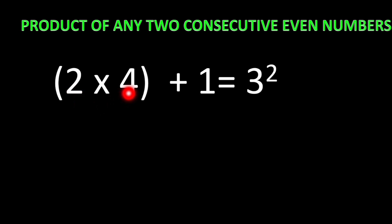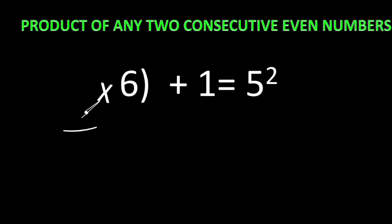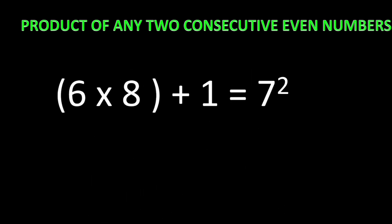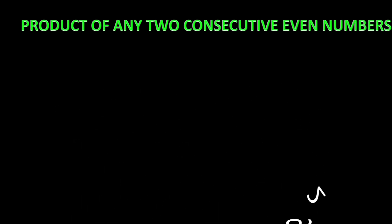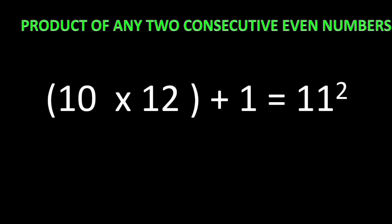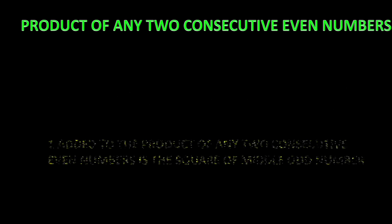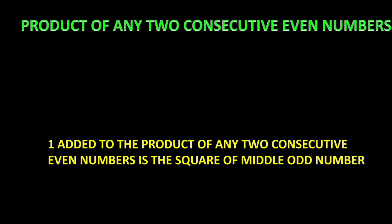Between any two consecutive even numbers there is one odd number in the middle. When we find the product of those two even numbers and add 1, we get the square of the middle odd number. For example, 6 times 8 plus 1 equals 7². Likewise, 8 times 10 plus 1 equals 9², and 10 times 12 equals 120, plus 1 equals 121, which is 11². So 1 added to the product of any two consecutive even numbers is the square of the middle odd number.